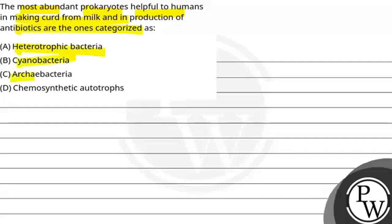Option A is heterotrophic bacteria, option B is cyanobacteria, option C is archaebacteria, and option D is chemosynthetic autotrophs. We have said that most abundant prokaryotes are helpful to humans in making curd from milk as well as production of antibiotics.